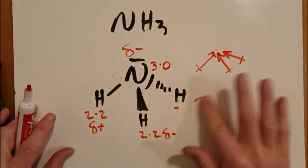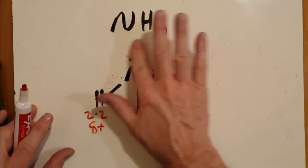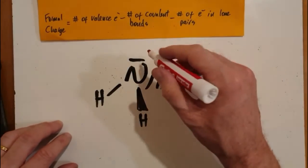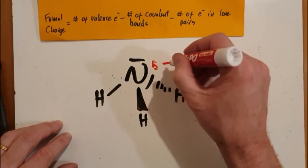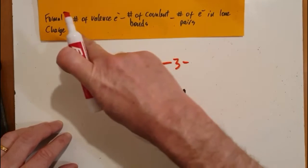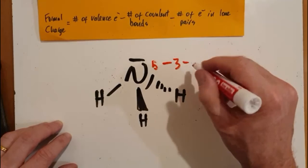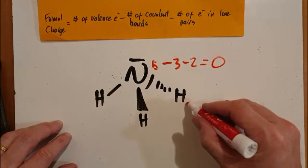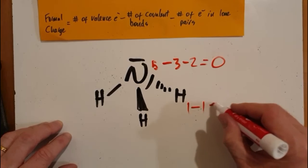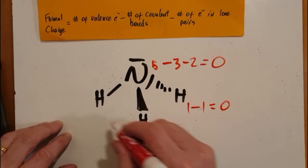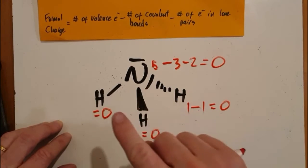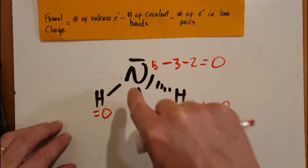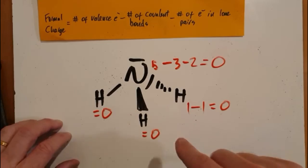Let's do the formal charge just for completeness. Nitrogen has five valence electrons minus three bonds minus two electrons in that lone pair, so nitrogen is zero. Hydrogen is in group one — one valence electron minus one bond is also zero. Double check: add up the formal charges, it should equal the charge on the molecule, which is zero. So that's good, and we're done.